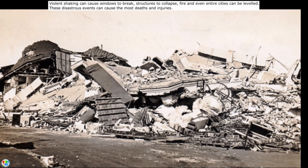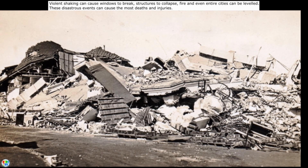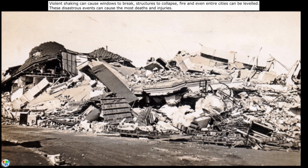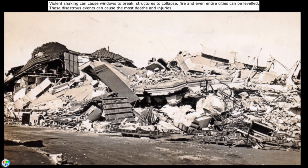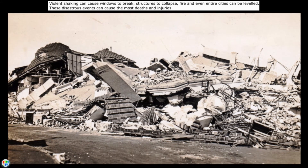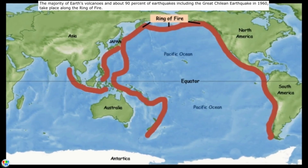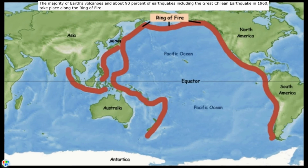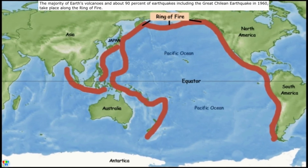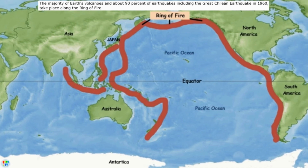Violent shaking can cause windows to break, structures to collapse, fire, and even entire cities can be levelled. These disastrous events can cause the most deaths and injuries. The majority of Earth's volcanoes and about 90% of earthquakes, including the Great Chilean earthquake in 1960, take place along the Ring of Fire.